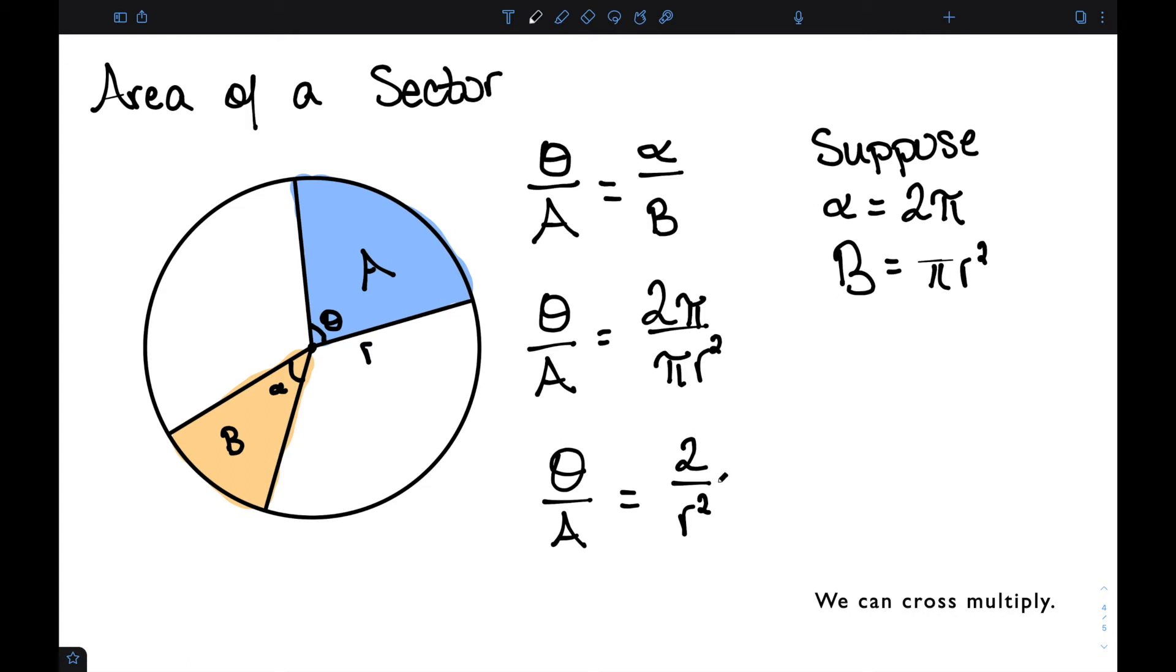We can cross multiply. This would give us theta r squared. When we multiply this way, is equal to 2A. Dividing both sides by 2 gives me that one half theta r squared is equal to A. So I can determine the area of a sector by multiplying one half times the central angle times the radius squared.